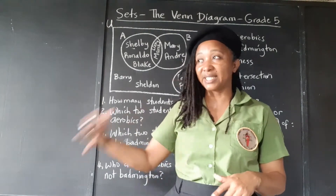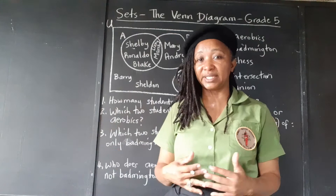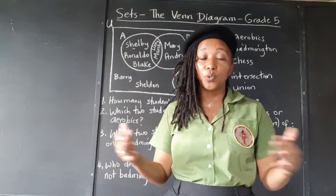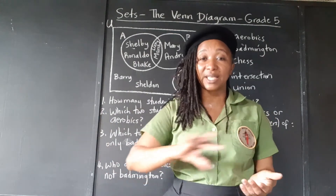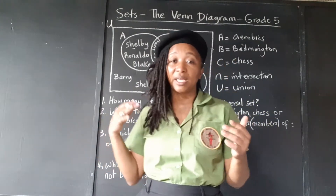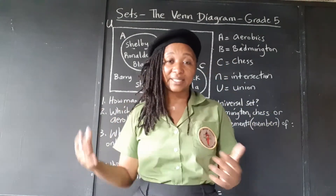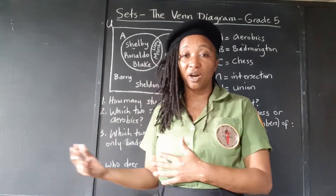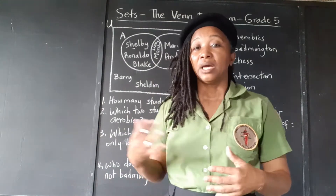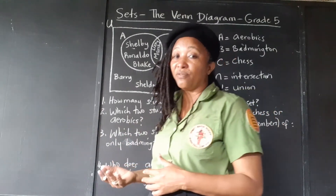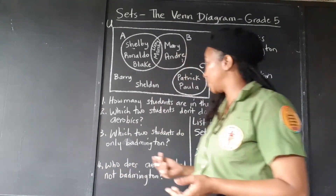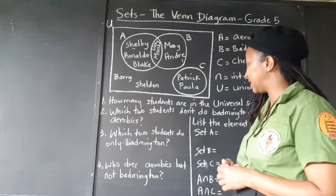We don't have to list them again for each set. So the union, we just list everybody in that set, everybody in the other, and the ones who overlap, just once we list them.